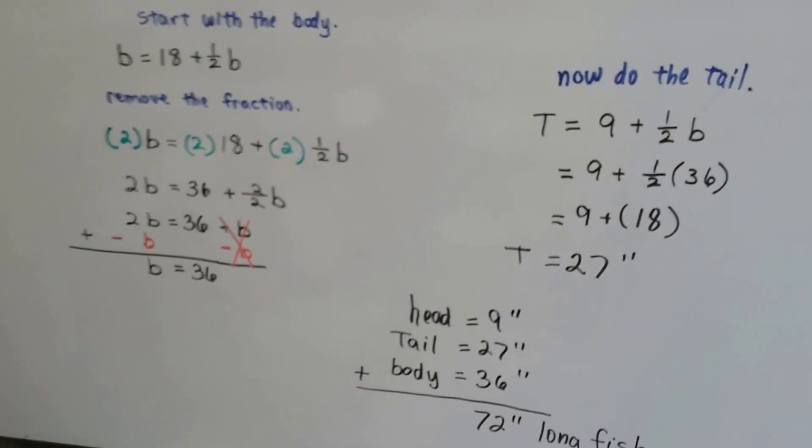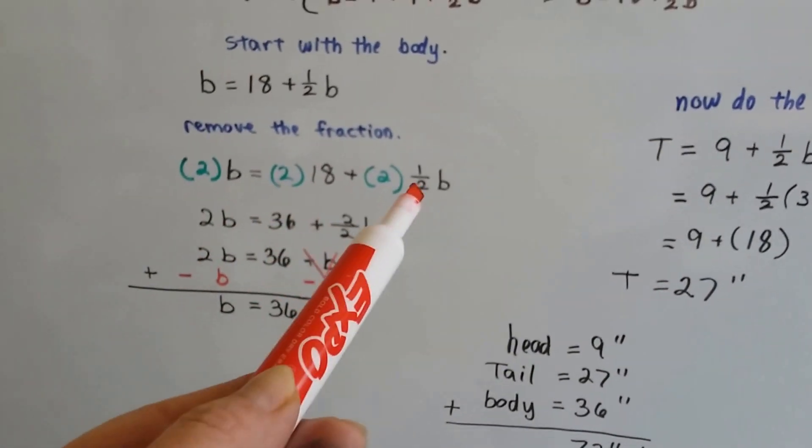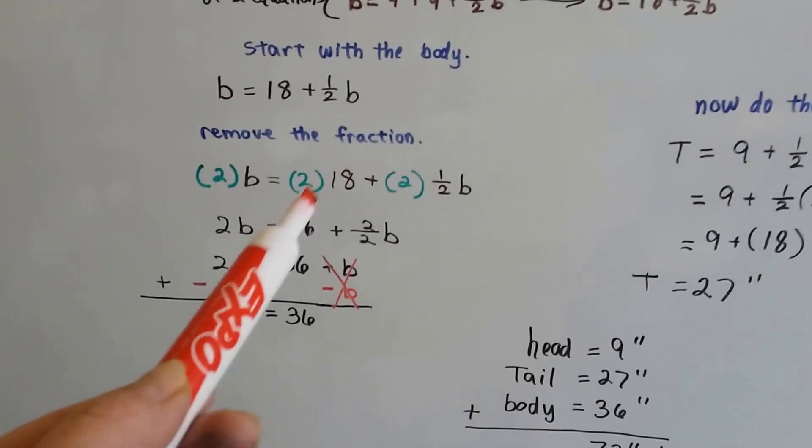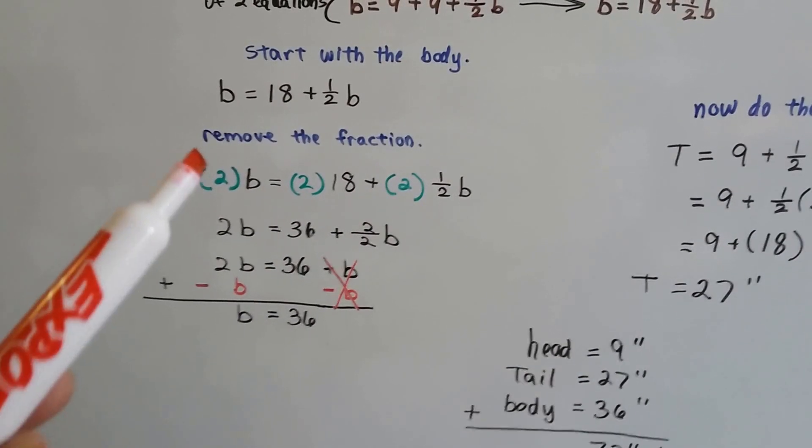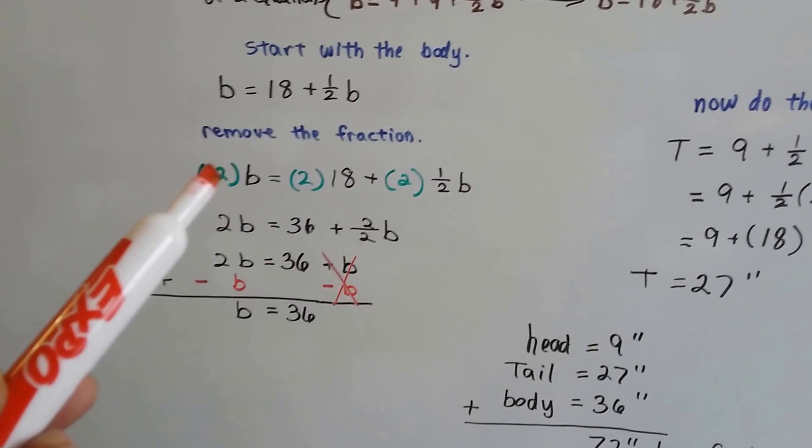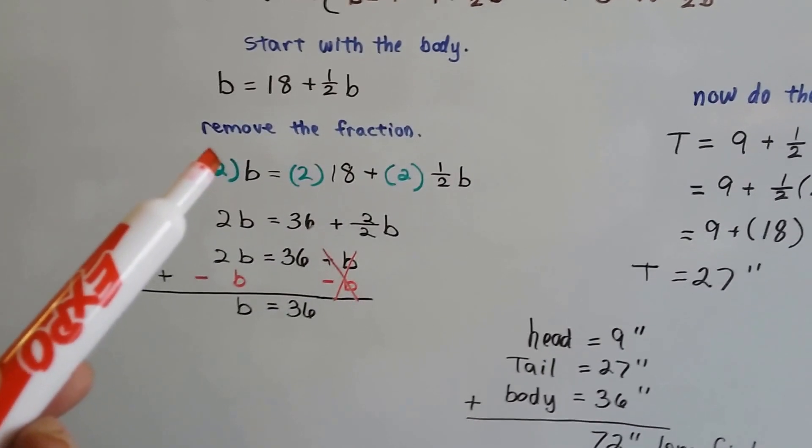Now the big mistake that everyone makes is they remove this fraction by multiplying by two, but they forget to multiply this side of the equation by two.